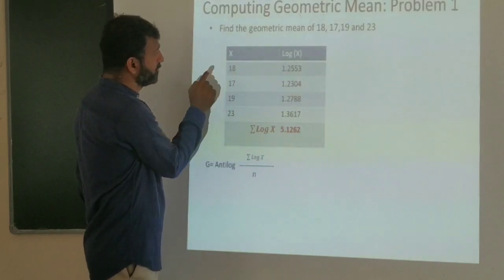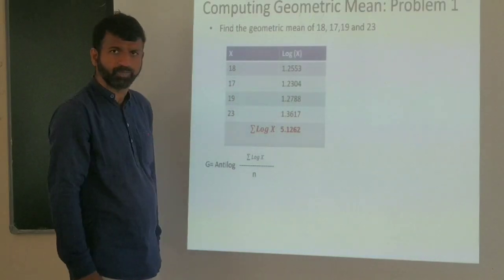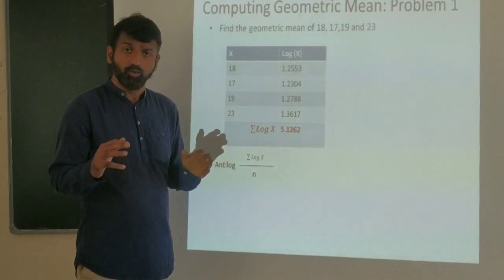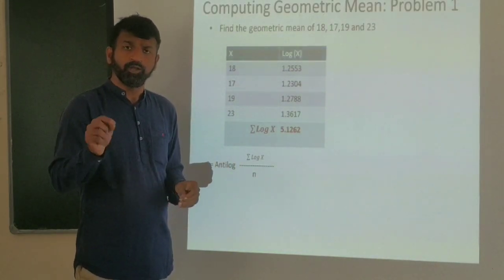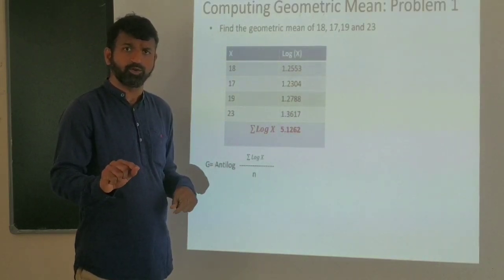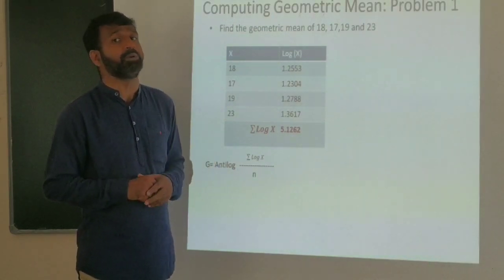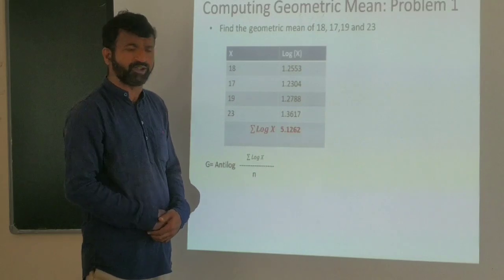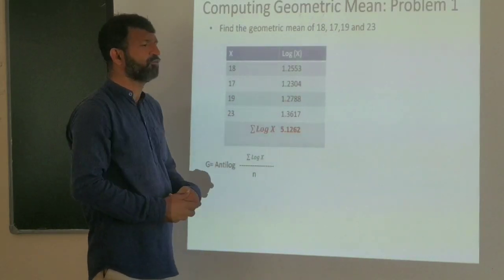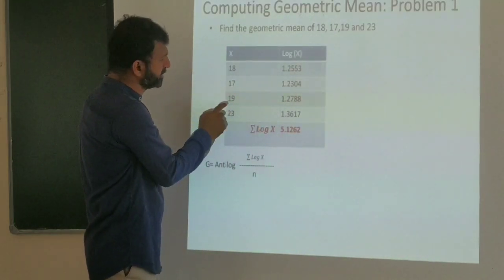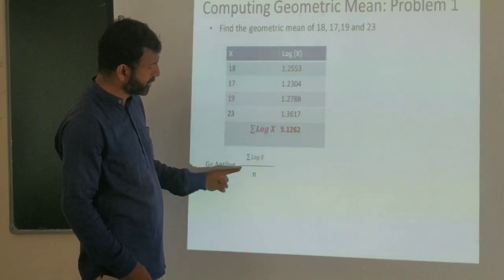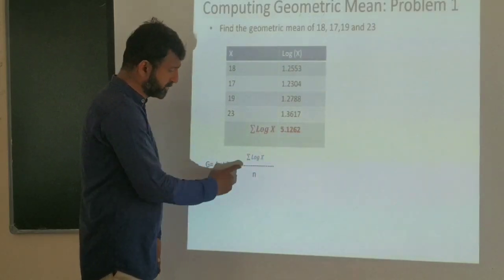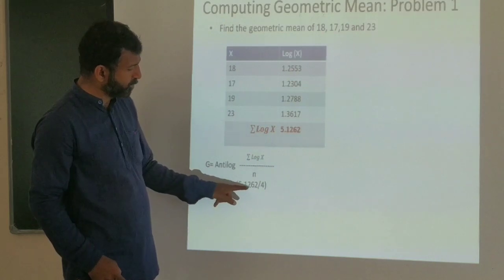The x values are 18, 17, 19, and 23. We compute log x for each: log 18, log 17, log 19, and log 23. Using log tables — without a calculator — log 18 equals 1.2553. Similarly find log values for 17, 19, and 23. The sum of log X equals 5.1262.